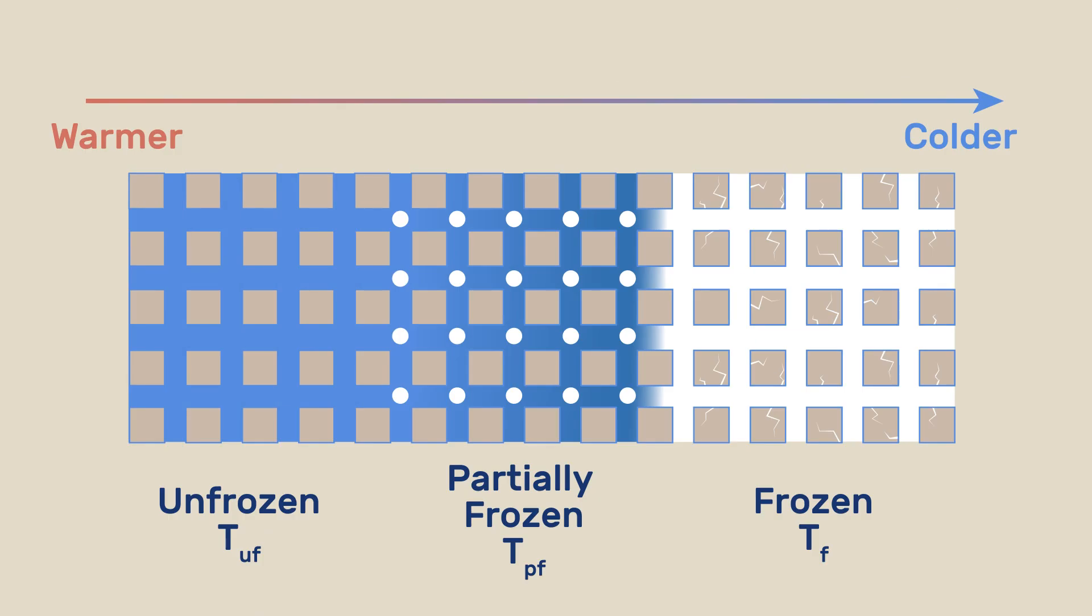Once cracks form, they themselves become zones of unrestrained growth where ice lenses may develop. Moreover, the loss of cohesion due to cracking means that pushing the detached material away does not require much force and may take place without filling the whole volume of the cracks.